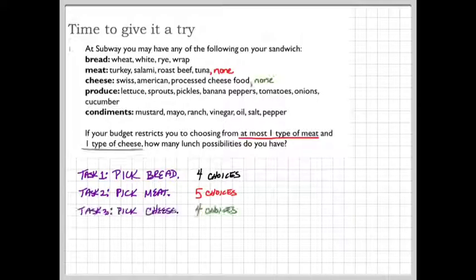Next, let's pick your cheese. Again, this is another one of those cases where you can pick one of the cheeses offered, either Swiss processed cheese food, American, or if you're lactose intolerant, you may select none. So there will be four choices for cheese.